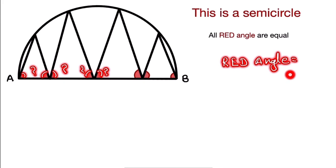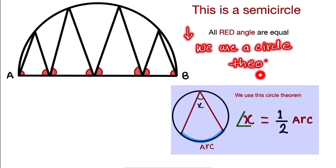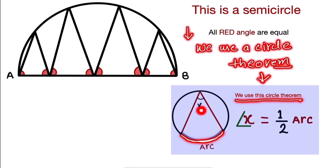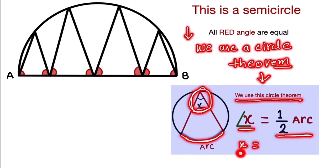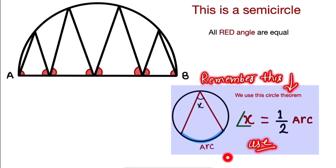We are going to use a circle theorem — a very unique theorem. When the angle on the arc is given, then the angle on the circumference of the circle is half. So if the circumference angle is x, then the arc angle is 2x. Remember this theorem; we are going to use it throughout the solution.